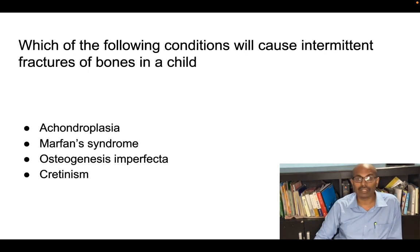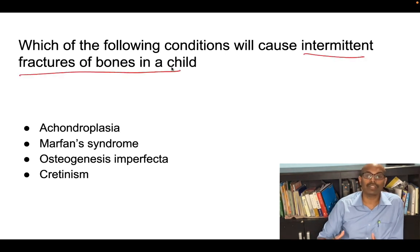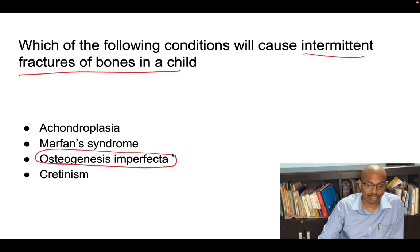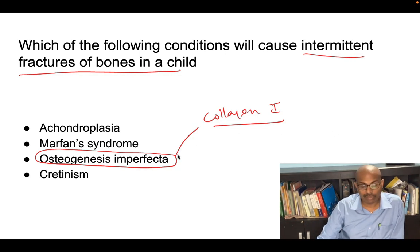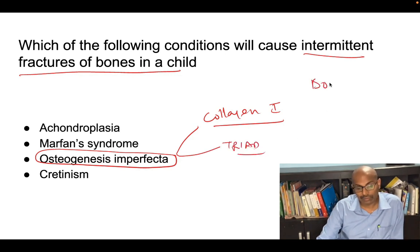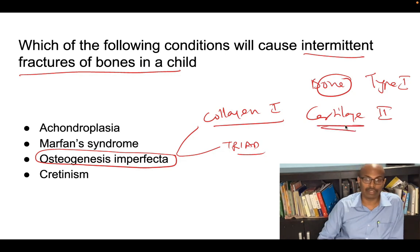The next question: which condition causes intermittent or repeated fractures of bones in a child? This is a straightforward spotter question — the answer is Osteogenesis Imperfecta. It is a defect in type 1 collagen formation and can be autosomal recessive or dominant. Remember: bone is type 1 collagen — the number '1' is in the word 'bone.' Cartilage is type 2 collagen. This has been asked very often.